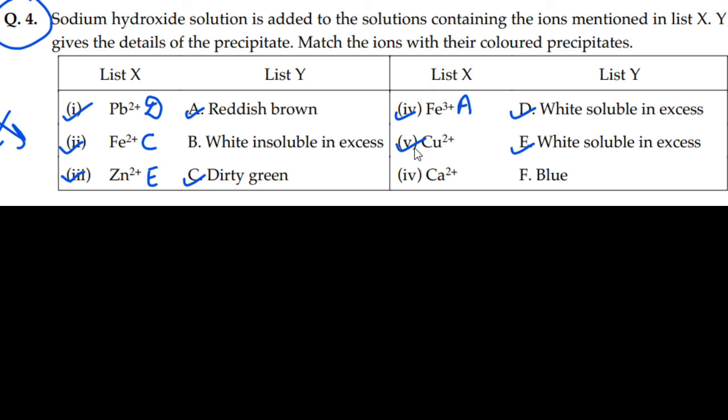What's the fifth? Cu²⁺. This one is blue color, so this is F. And the last one, sixth one - Ca²⁺, white insoluble in excess. Right answer is B. B is the right answer. So this is the fifth question.